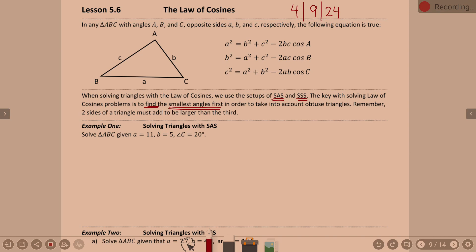Also, two sides of a triangle must add to be larger than the third. If you have three sides of a triangle, the two shorter sides have to add to be longer than the longest side — otherwise it physically cannot make a triangle. Always check that the two shorter sides add to be larger than the third side, and when finding angles, always start by finding the smallest angle first.